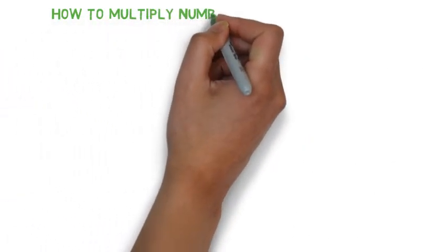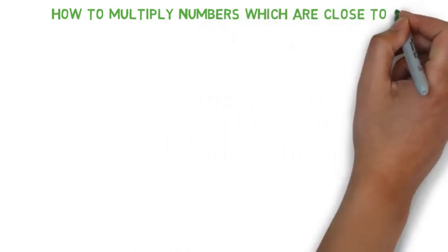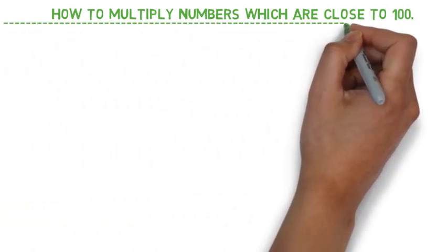As I promised yesterday, today I am going to teach you how to multiply numbers which are close to 100. This is also one of the simplest methods which can be solved within 2 seconds. So without further delay, let's start.